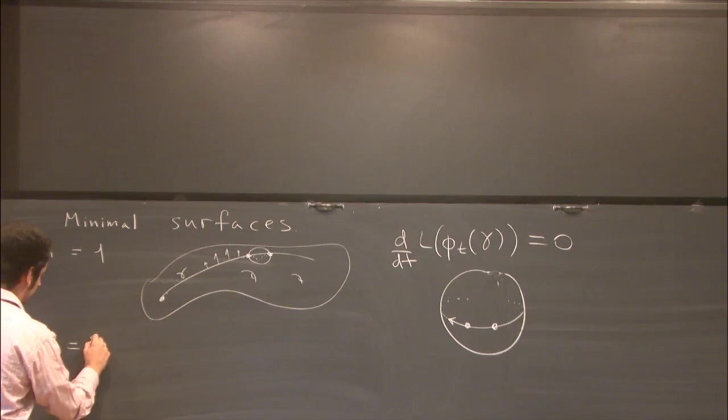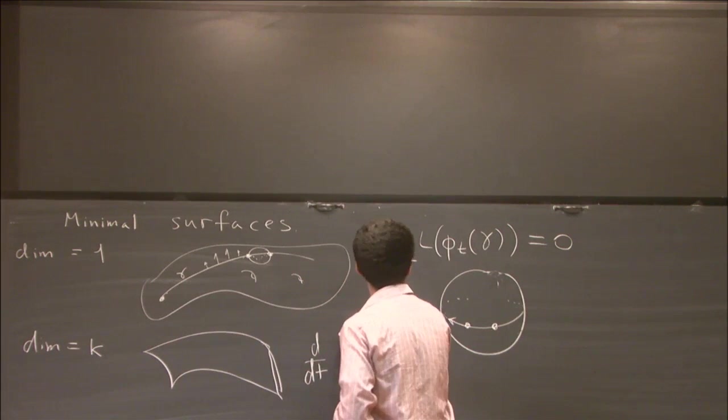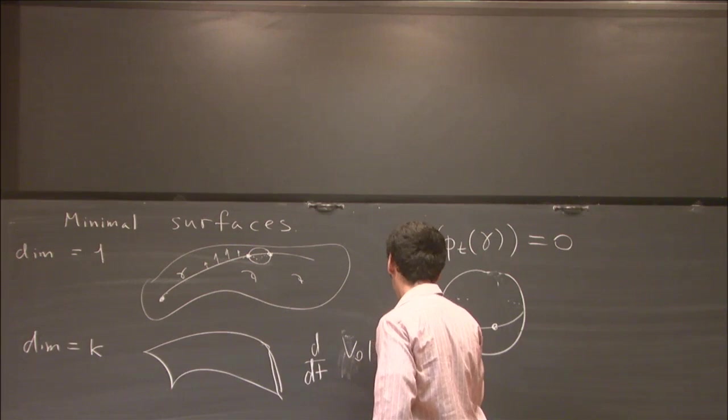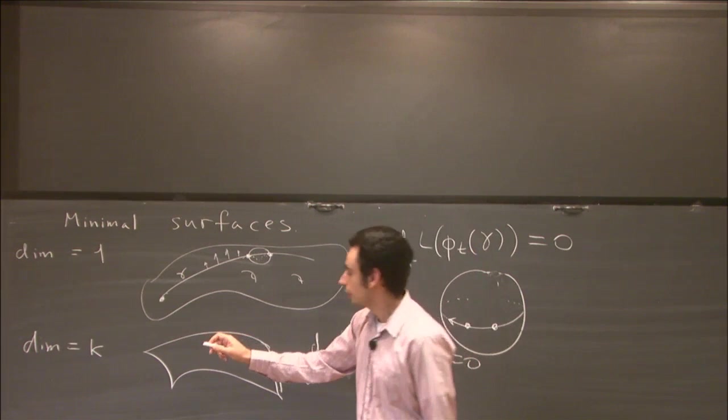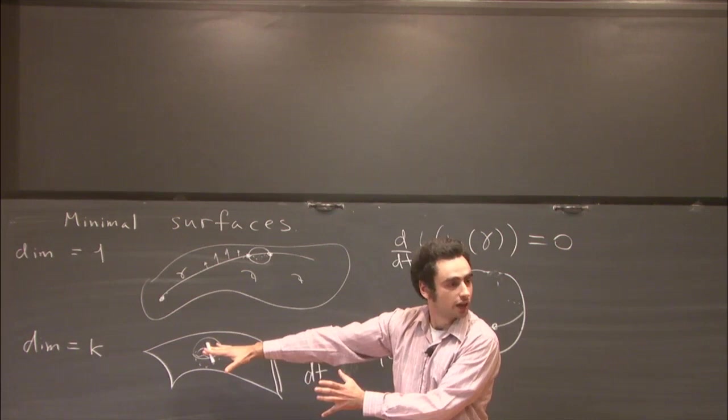Similarly for a general dimension, we can think of surfaces with this property that if you vary them with some one-parameter family of vector fields, their volume will have derivative zero. It is also true that smooth surfaces will have the property that if you look at a small ball, then a smooth minimal surface will have the smallest area among all surfaces in that ball with that boundary.